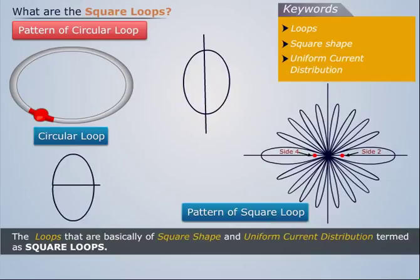On the other hand when we talk about the pattern of the large square loop, it is a function of both theta and phi.